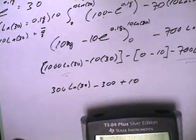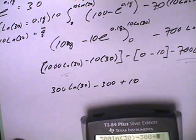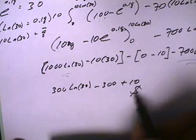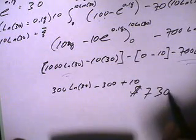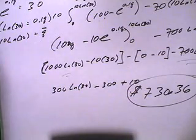So 300 natural log of 30, and then minus 300 and plus 10. I get a final amount of $730.36.